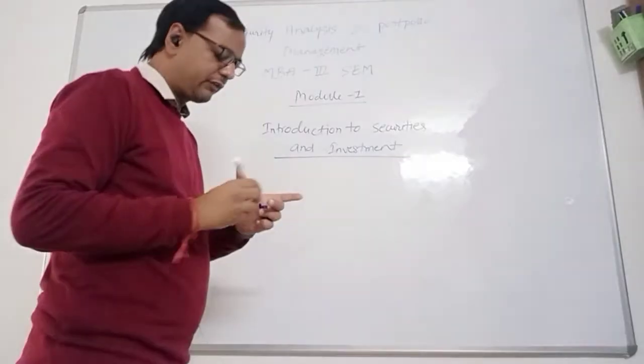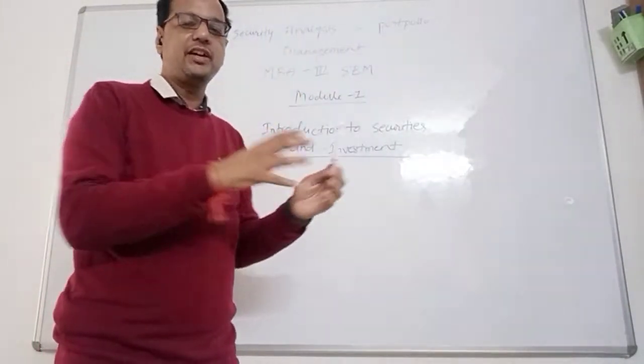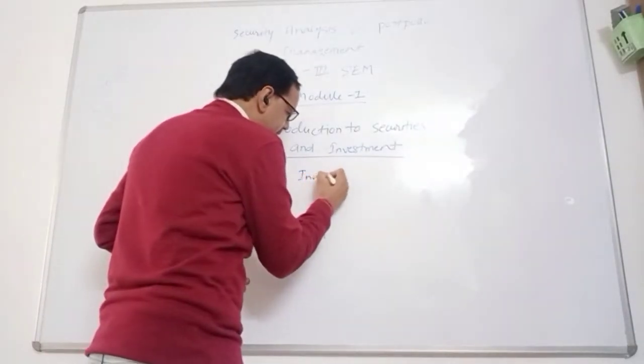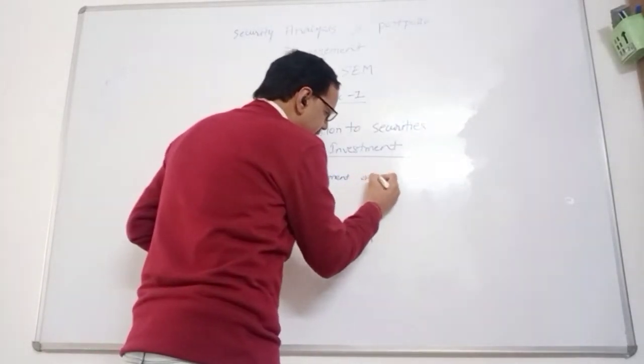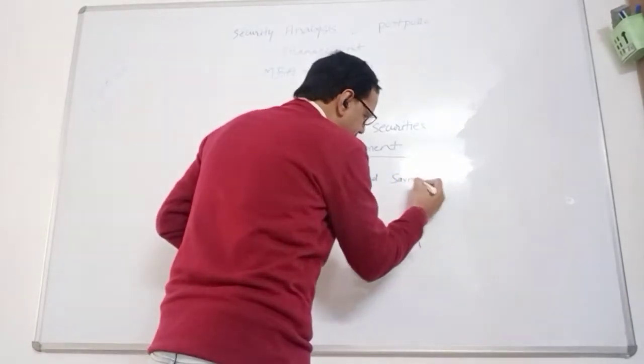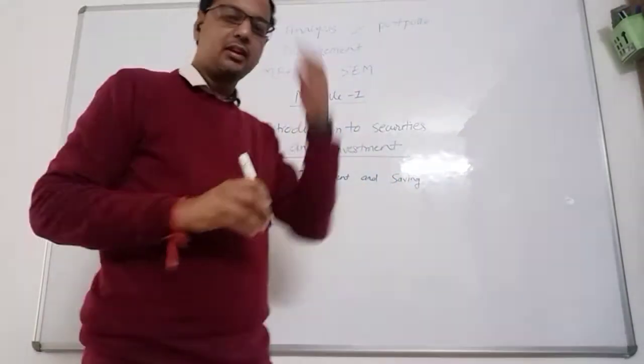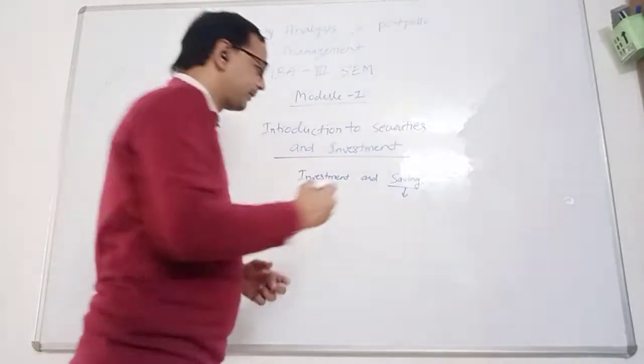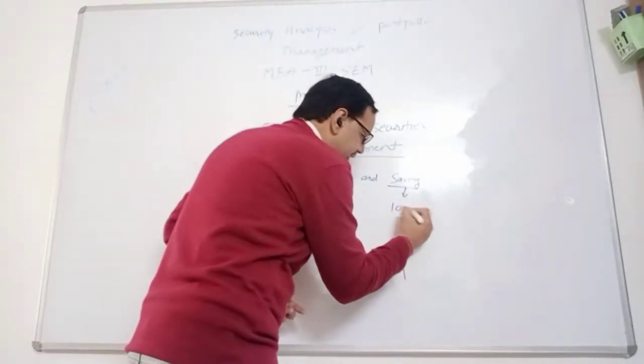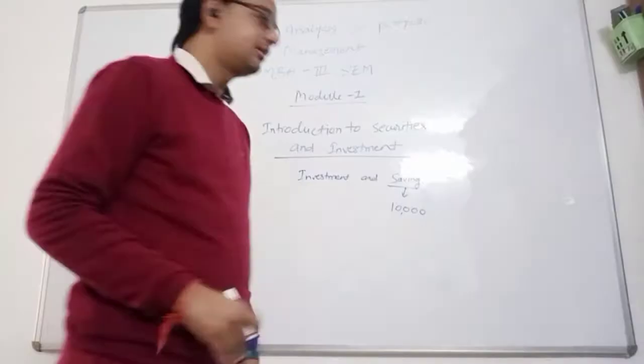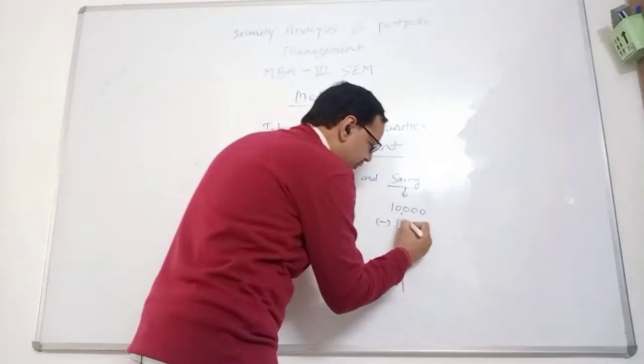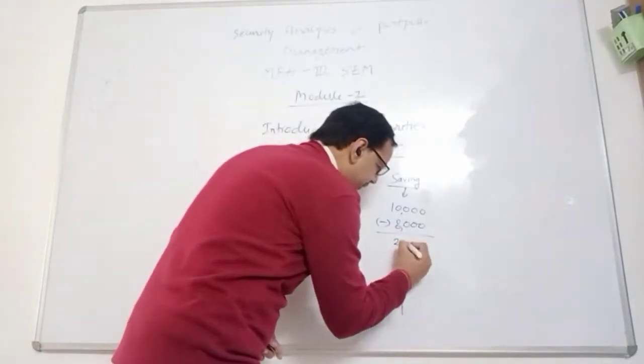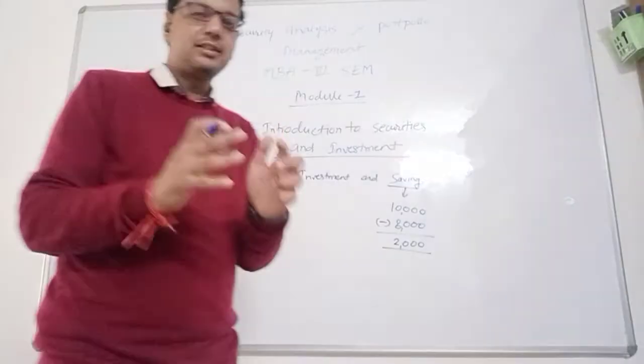The first topic of module 1 is Investment, difference between Investment and Saving. Saving means if you are earning Rs. 10,000, out of this your expenses is Rs. 8,000, then you are saving Rs. 2,000. This is your savings.